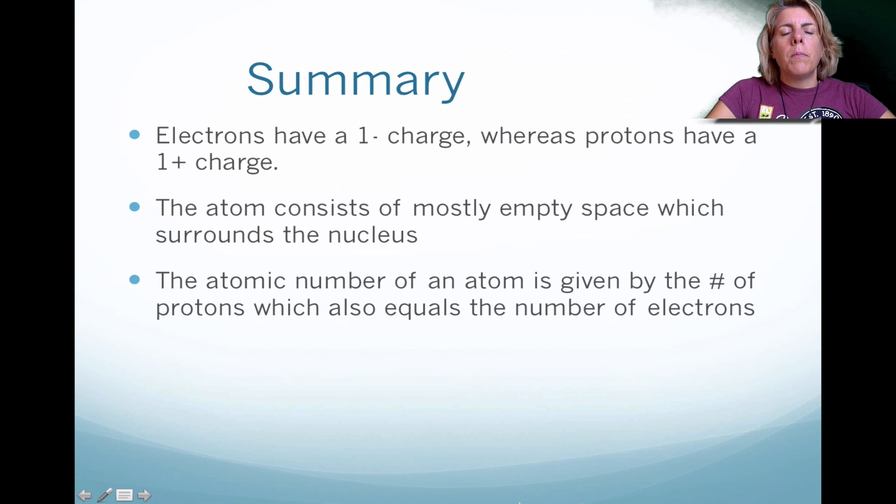So in summary, through J.J. Thompson and Milliken, they determined that electrons have a negative charge. And then through the efforts of Rutherford and Mosley, they discovered that protons in the nucleus have a positive charge. Because of Rutherford's experiment, the atom has to consist of mostly empty space. And that Mosley determined that the positively charged nucleus contains a certain number of protons and that certain number of protons actually determines the type of element. And because the atoms exist as neutral species, the number of protons has to equal the number of electrons.